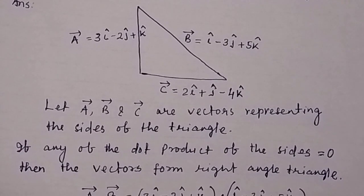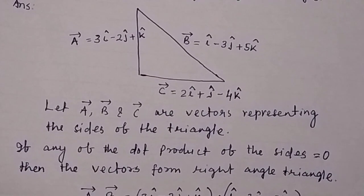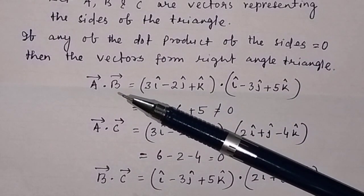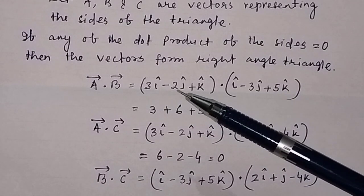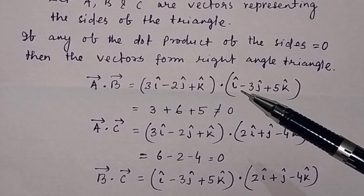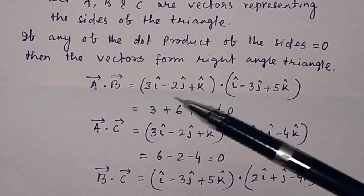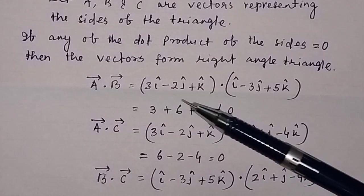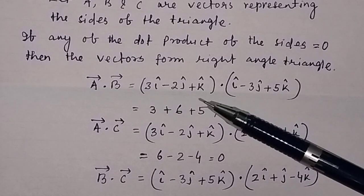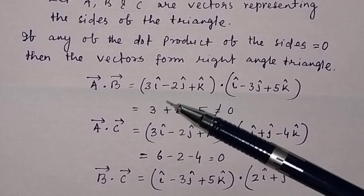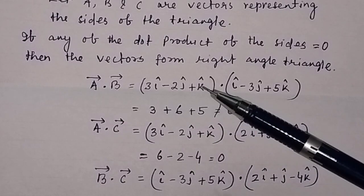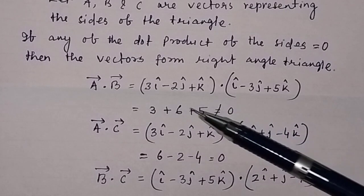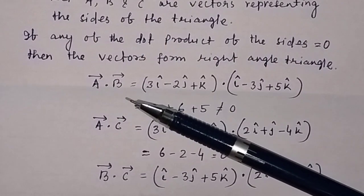Let us check which dot product of the sides is equal to zero. First, let us check a·b. Taking the dot product: (3i-cap minus 2j-cap plus k-cap)·(i-cap minus 3j-cap plus 5k-cap). Since only i·i, j·j, k·k equal 1 and cross terms equal 0, we get 3×1=3, (−2)×(−3)=+6, 1×5=+5. Adding these gives 14, which is not equal to zero, so these two sides are not the right angle sides.